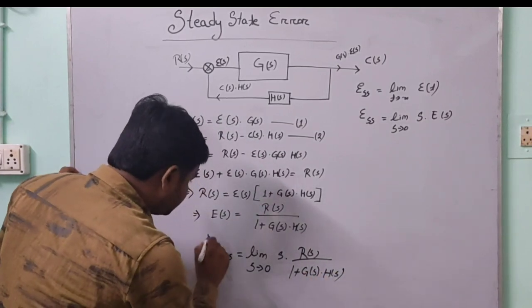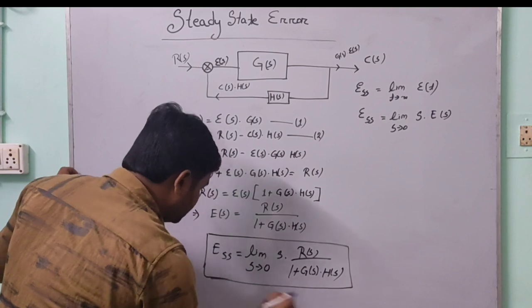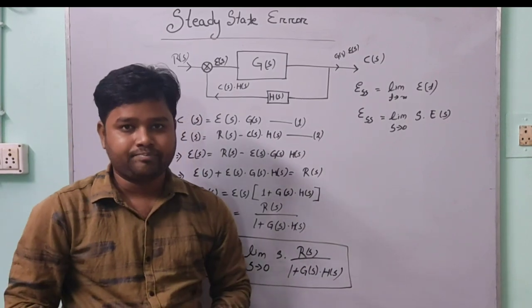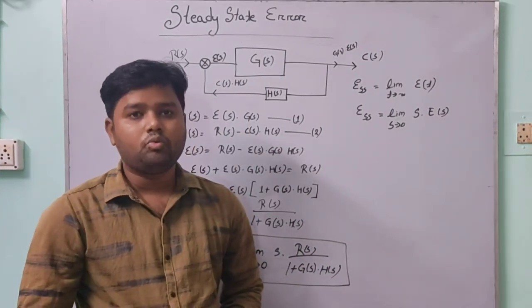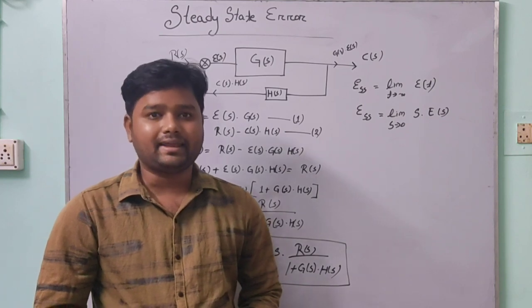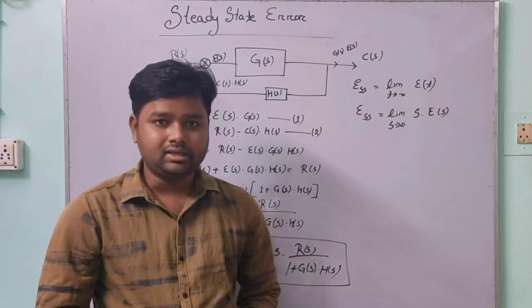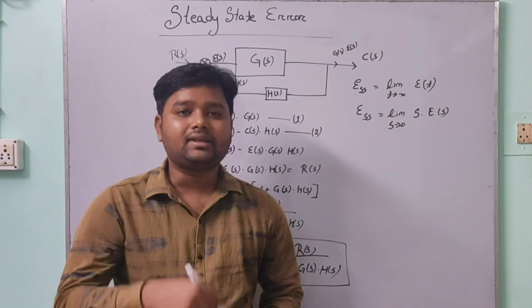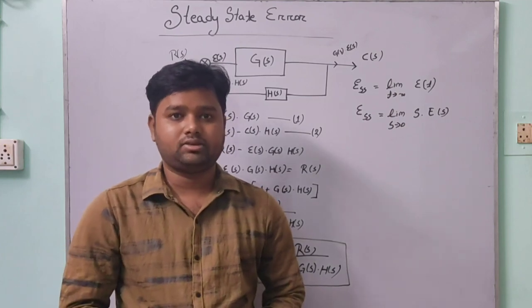By using this formula, we will find the static error constants — that is Kp, Kv, and Ka — in the next class. Thank you.